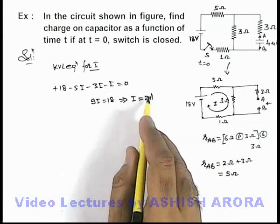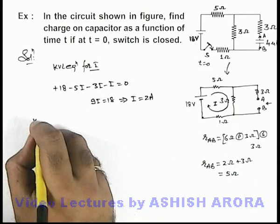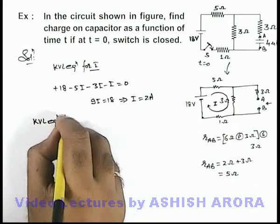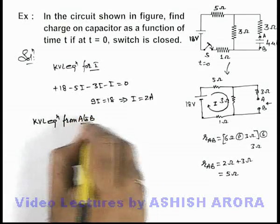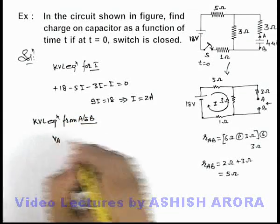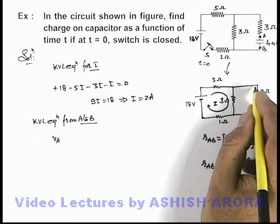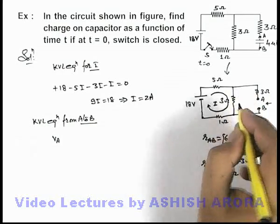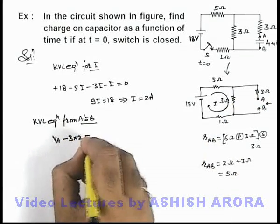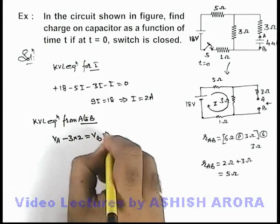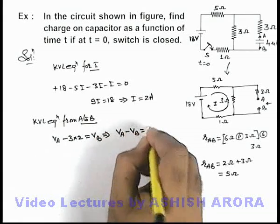Using this current we can find out the potential difference across A B. If we again write KVL equation from A to B, this can be written as V_A. No potential drop across this 3 ohm because no current is flowing here. If we move in this direction it'll be minus 3i, i is 2 ampere, so V_A minus V_B we are getting is 6 volt.